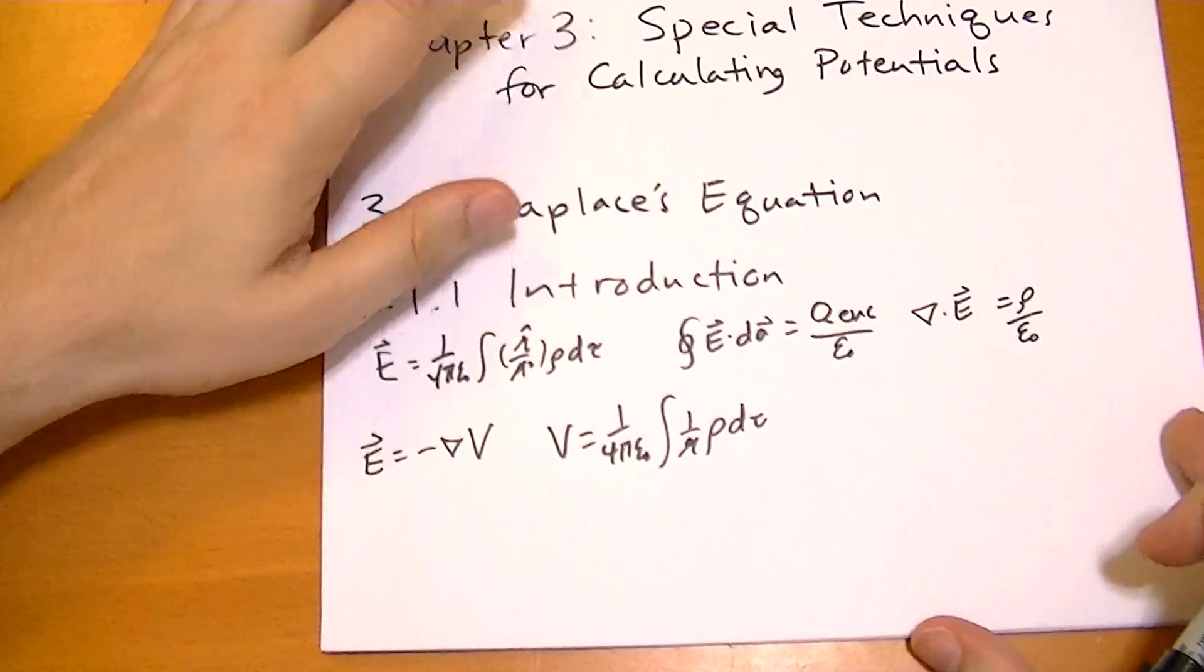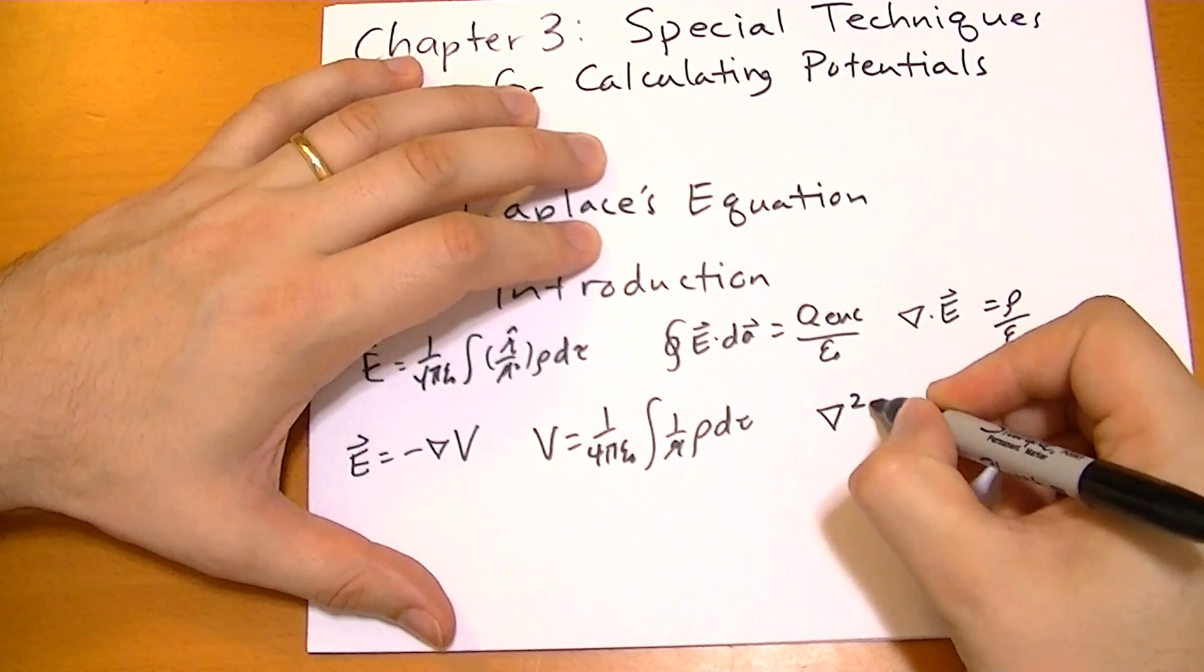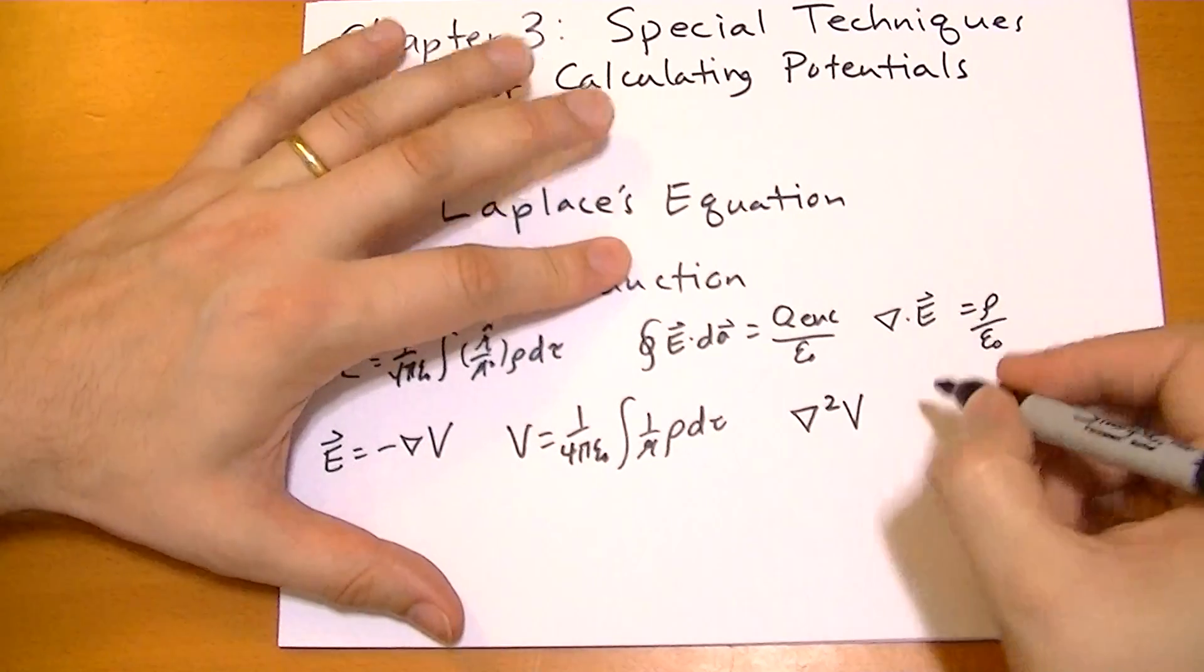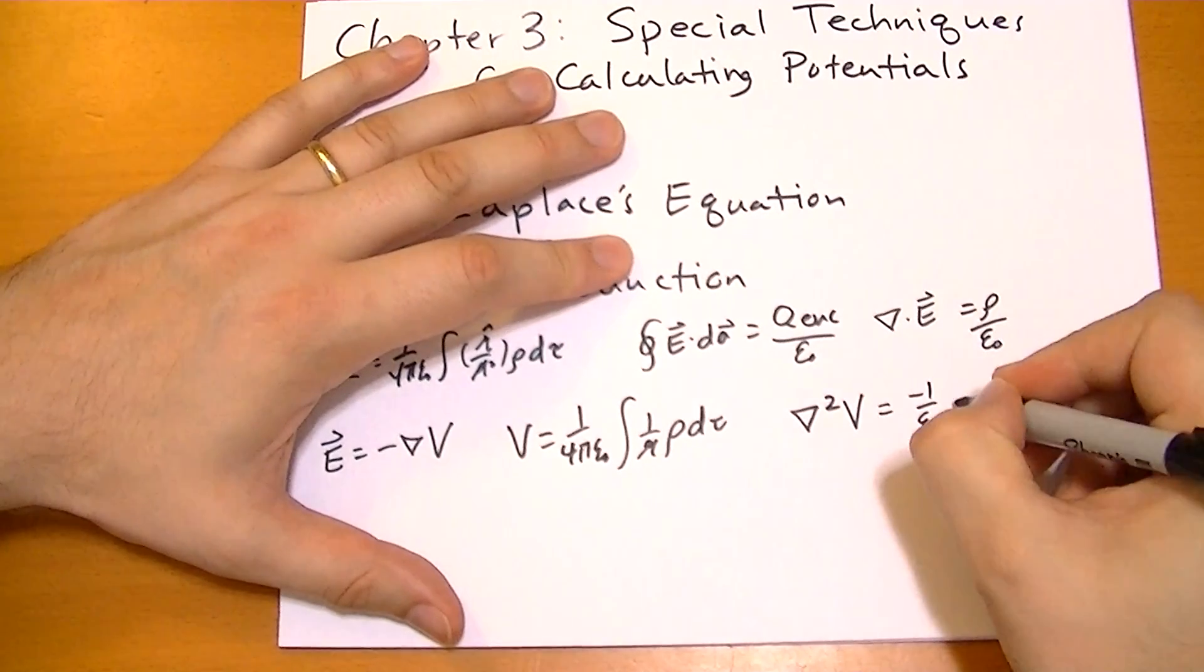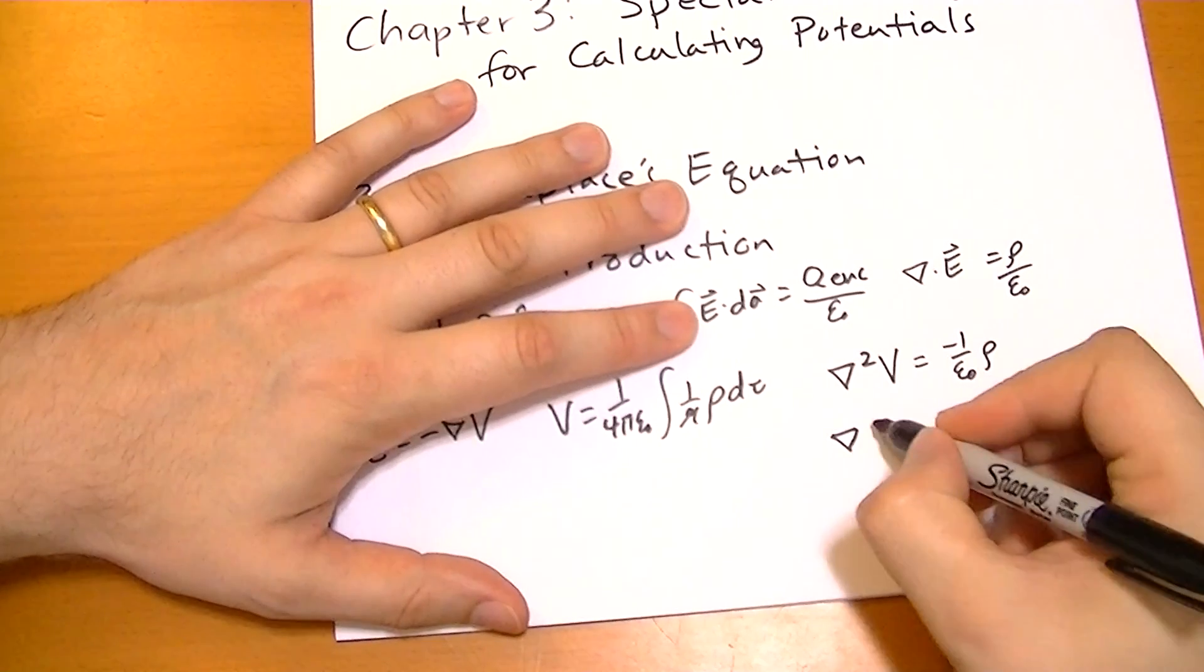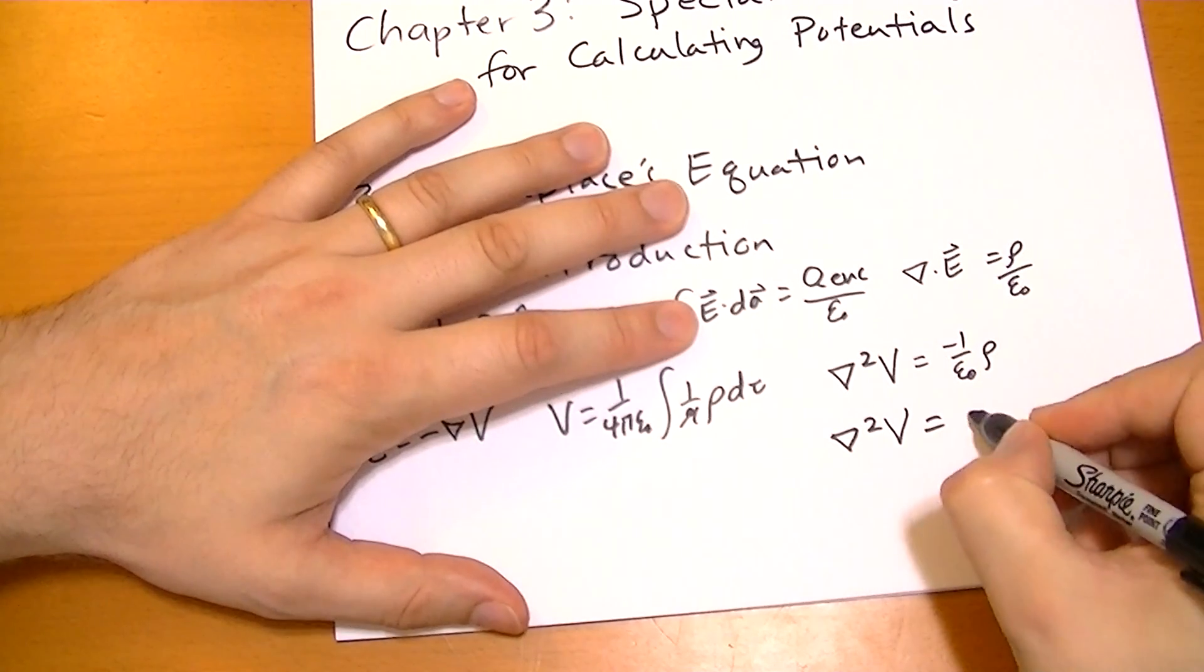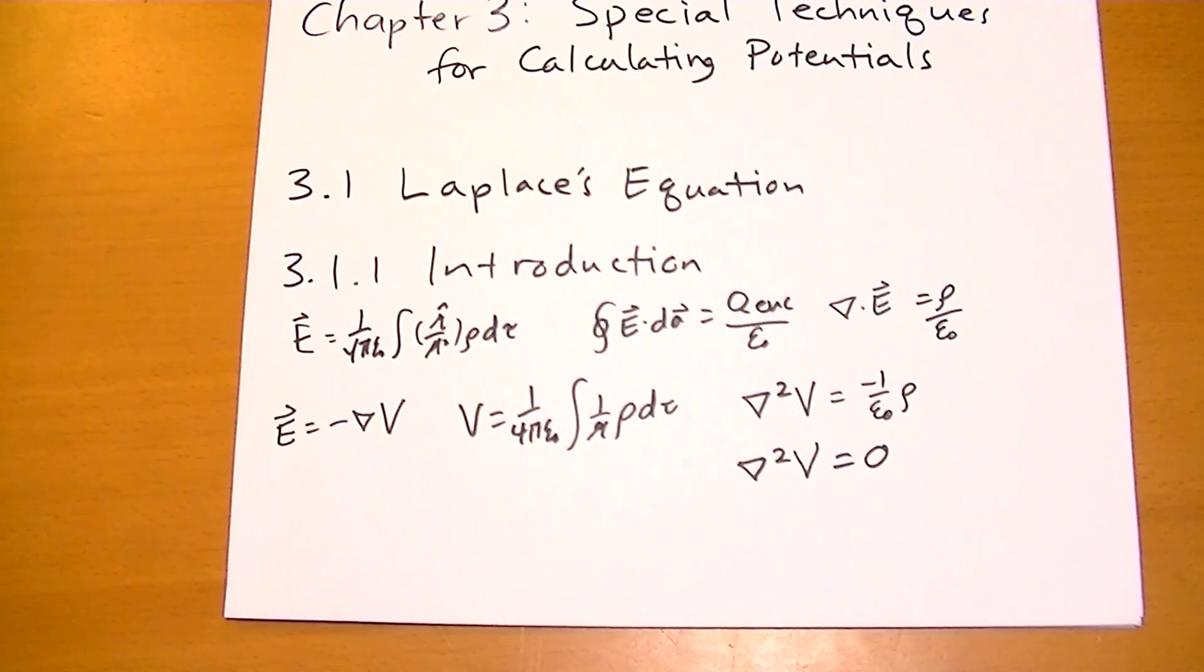So we can use Poisson's equation, which basically says the Laplacian of the potential is equal to negative 1 over epsilon naught times the charge density. And Laplace's equation, which basically says that in certain regions of space there is no charge, and so you can use this equation to solve for it.